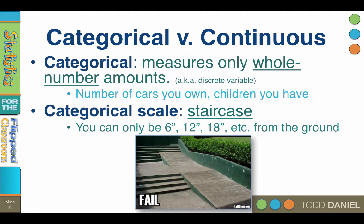A categorical variable, on the other hand, can measure only whole number amounts. There cannot be partials or fractions. Categorical variables are also called discrete variables. How many cars do you own? How many children do you have? How many songs are on your iPod? How many iPods do you own?